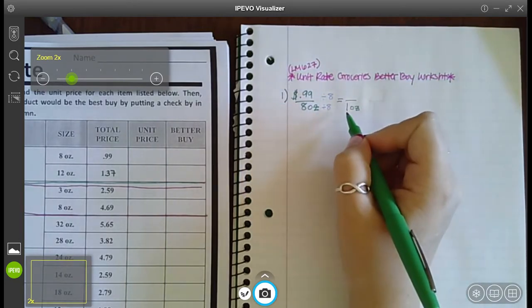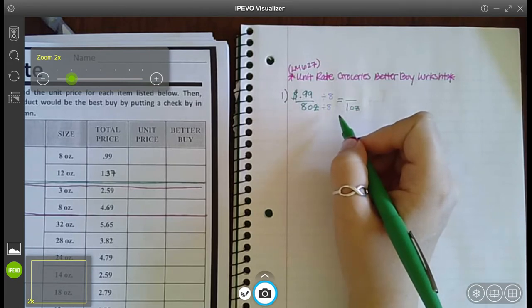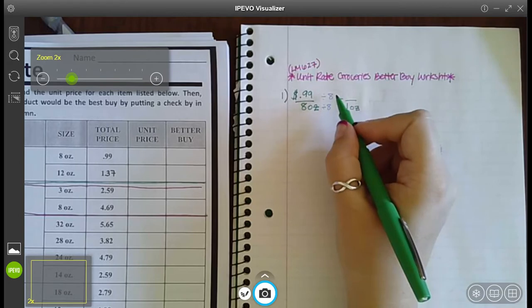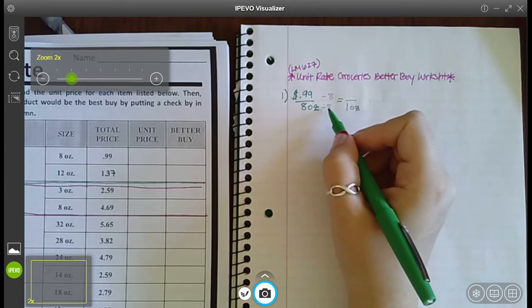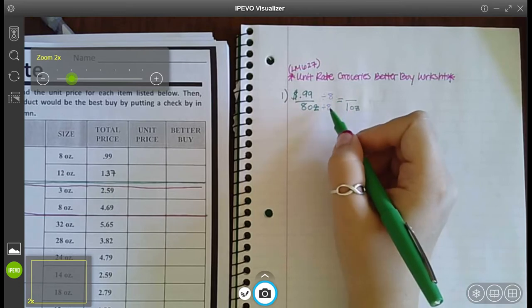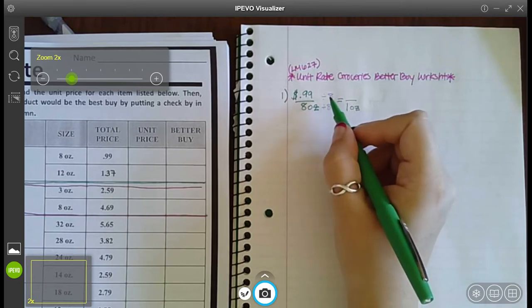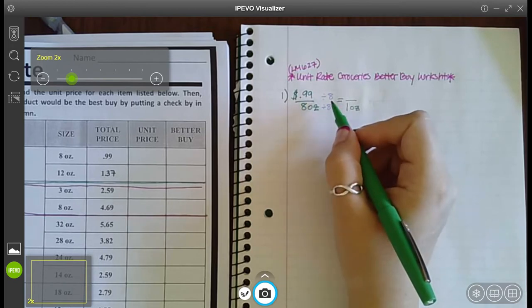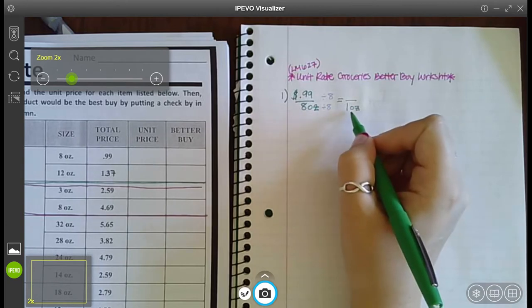Whenever you divide something by itself you get 1, and I can do this because as long as I do the same thing to the bottom I do to the top as well, I can do whatever I want. If you think about it, any number over itself is 1, right? 8 over 8 is 1, 10 over 10 is 1, 3 over 3 is 1. So as long as I do the same thing to both the top and the bottom, then I can multiply or divide by whatever I want. I can divide by 8 in order to get a denominator of 1 and give me a unit rate.